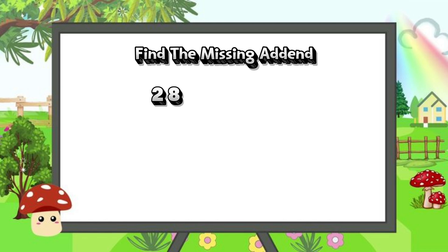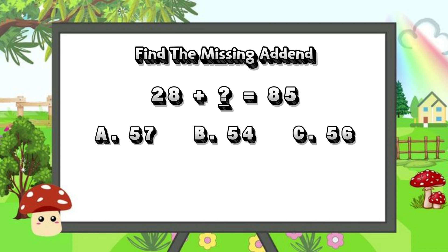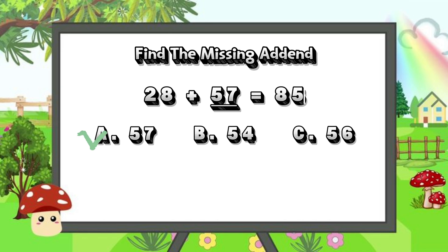28 plus blank is equals to 85. Is it letter A, 57? Letter B, 54? Or is it letter C, 56? And the missing addend is letter A, 57. 28 plus 57 is equals to 85.